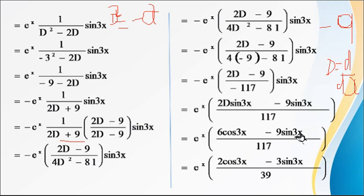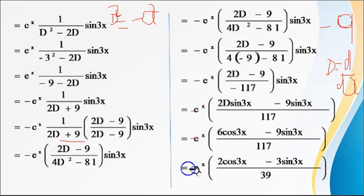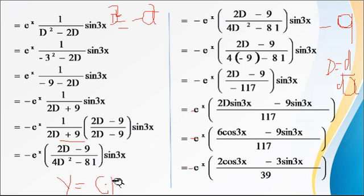Taking 3 common and cancelling, we get PI = −e^x · (2cos(3x) − 3sin(3x)) / 39. Therefore, the general solution is y = CF + PI: write down the values of CF and PI.